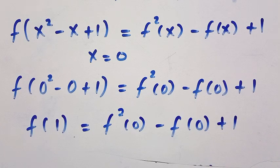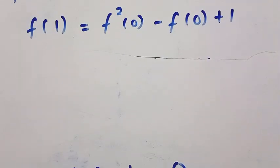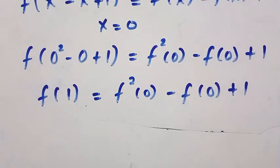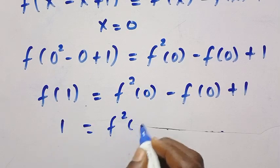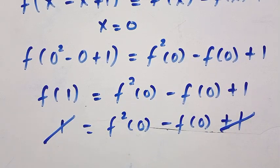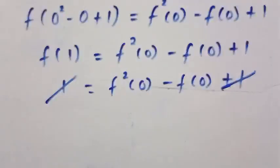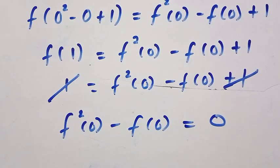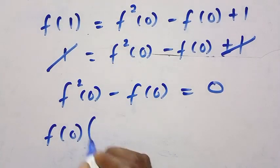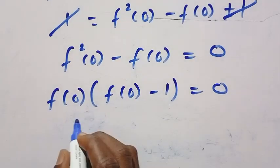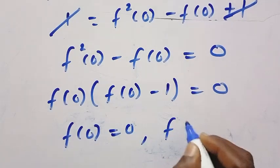What is f of 1 that we got? We got f of 1 equals 1. So replacing f of 1 with 1: 1 equals f squared of 0 minus f of 0 plus 1. The 1s cancel, and we have f squared of 0 minus f of 0 equals 0. This gives us f of 0 equals 0 or f of 0 equals 1. These are the two possible values.